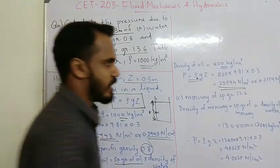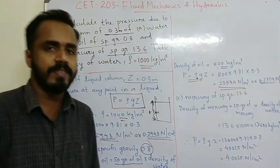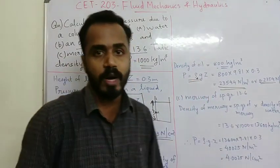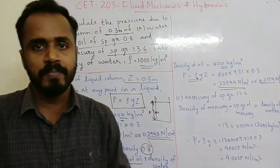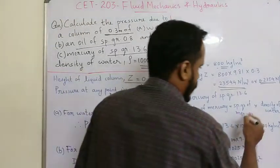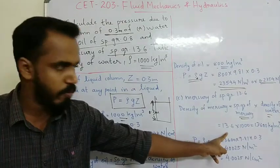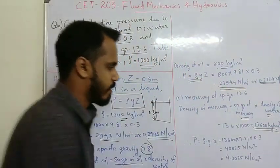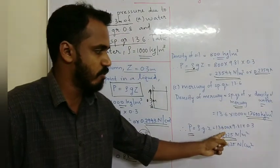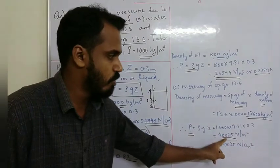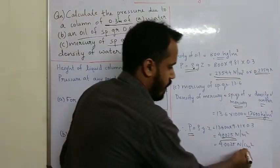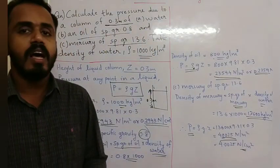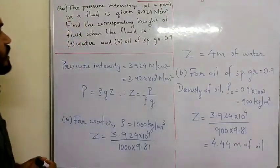Dividing by 10⁴ gives 0.2354 N/cm² for oil. For mercury of specific gravity 13.6: density of mercury equals 13.6 × 1000 = 13,600 kg/m³. So P = 13,600 × 9.81 × 0.3 = 40,025 N/m², which equals 4.0025 N/cm².